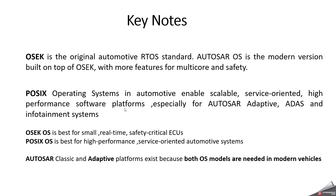From a functional safety perspective, OSEK was designed for deterministic execution which is excellent for safety, but POSIX operating system by itself is not sufficient for functional safety. Automotive POSIX OS vendors are adding partitioning, real-time scheduling, process isolation, and safety-certified kernels, so both can be used in a safety context but with very different approaches. The keynotes from this video: OSEK OS is best for small, real-time, safety-critical ECUs, while POSIX operating system is best for high-performance, service-oriented automotive systems.